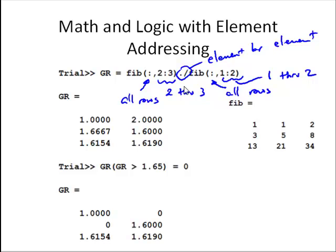We talked before with vectors about using logic or relational operators in element addressing and we can do the same thing here. Here we say take all elements of the matrix GR that have a value greater than 1.65 and set them equal to zero. We see the result is this element and this element both have values greater than 1.65 so they're replaced by these two zeros.